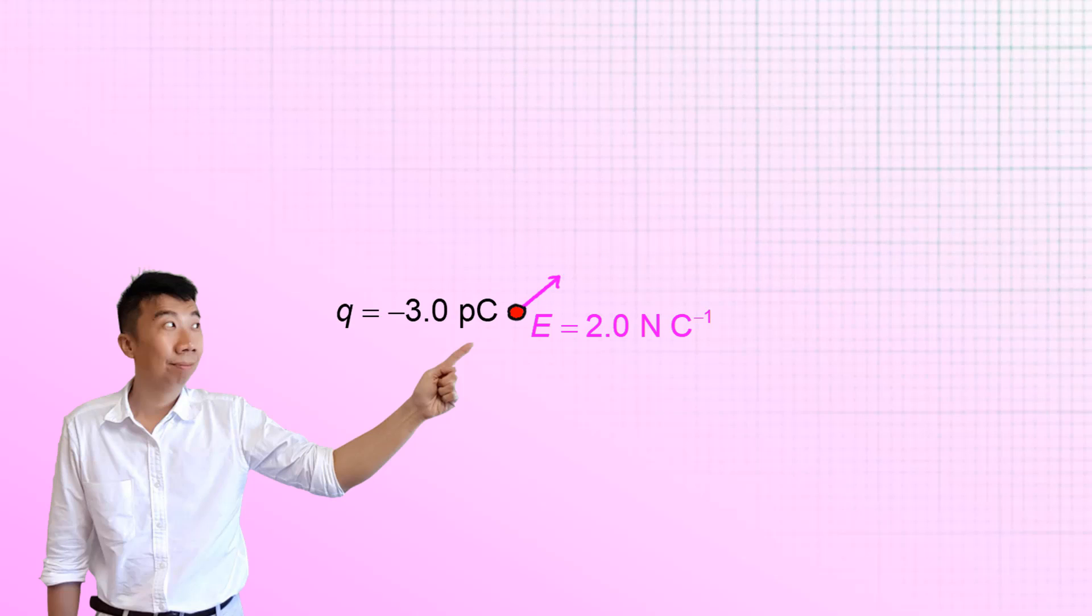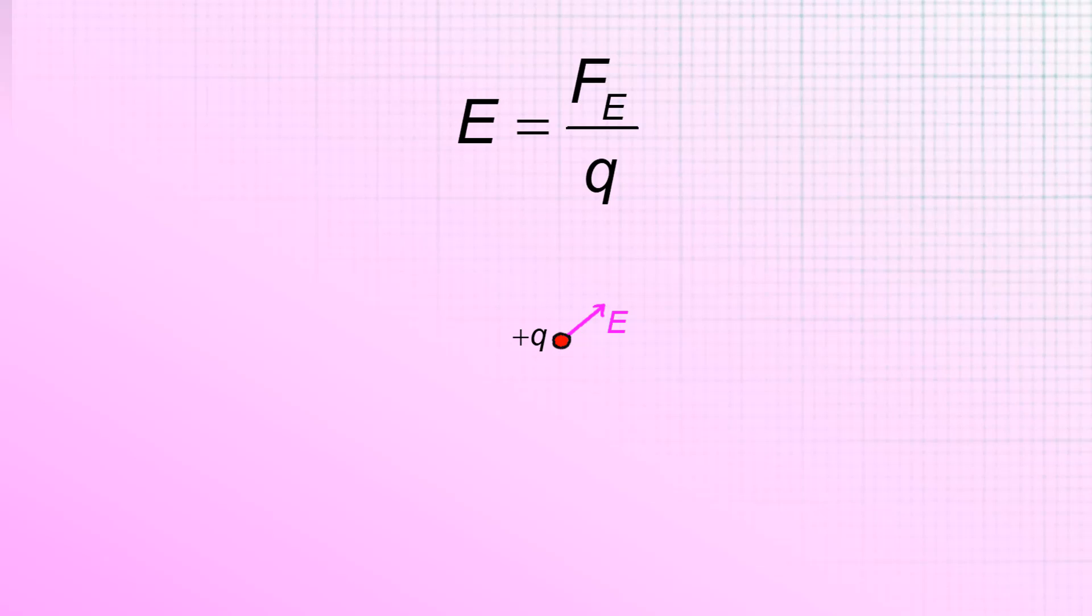Okay, what if we place a negative 3.0 picocoulombs test charge here? Now, this test charge is still going to experience a force of 6.0 piconewtons, but it's going to experience it in the opposite direction. Well, just two things to remember. Number one, field strength is force per unit charge. And two, by convention, the direction of the electric field is always defined for what's felt by positive test charges. So negative test charges will always feel the same force per unit charge, but in the opposite direction.